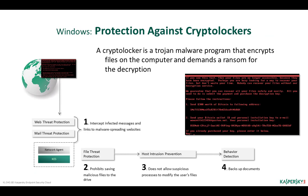A crypto locker is a Trojan malware program that encrypts files on the computer and demands a ransom for the decryption. Crypto lockers get on the computer from email messages and websites — once you open a dubious attachment or click an infected banner, the malware gets on the computer. Criminals often spoof messages from banks or tax offices. As soon as a crypto locker penetrates the computer, it reports to the command and control server, some types additionally requesting an encryption key. Then the ransomware encrypts files on the local and network drives, deletes their original copies, and deletes the encryption key — only the criminals have the copy. The malware then displays a message demanding a Bitcoin ransom for decrypting the files.